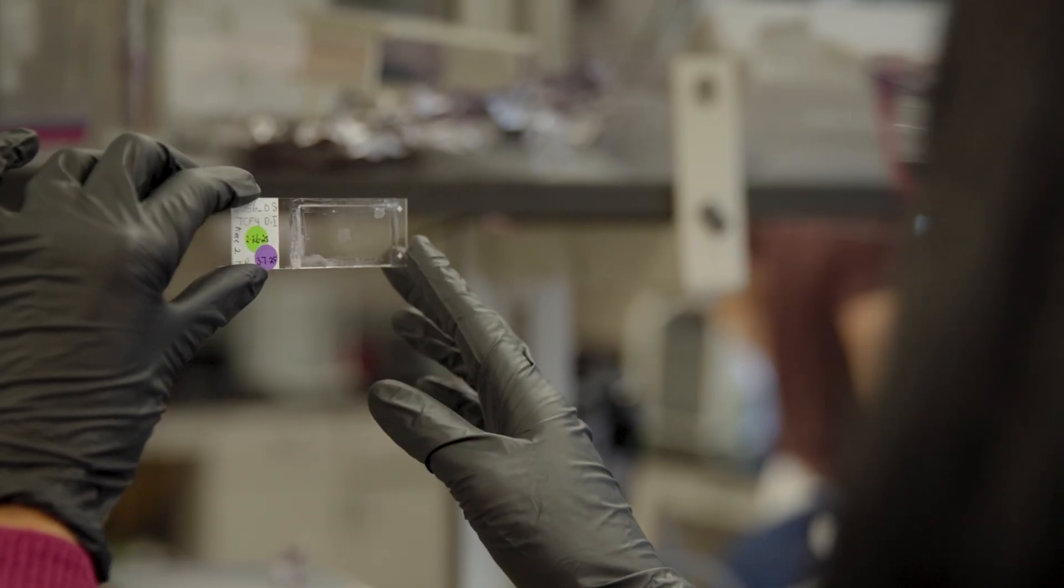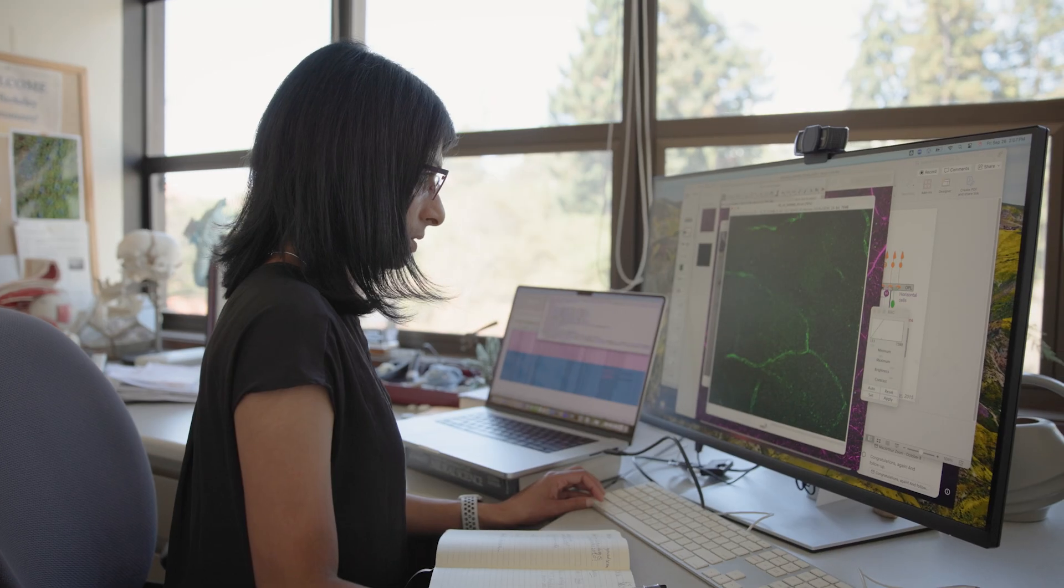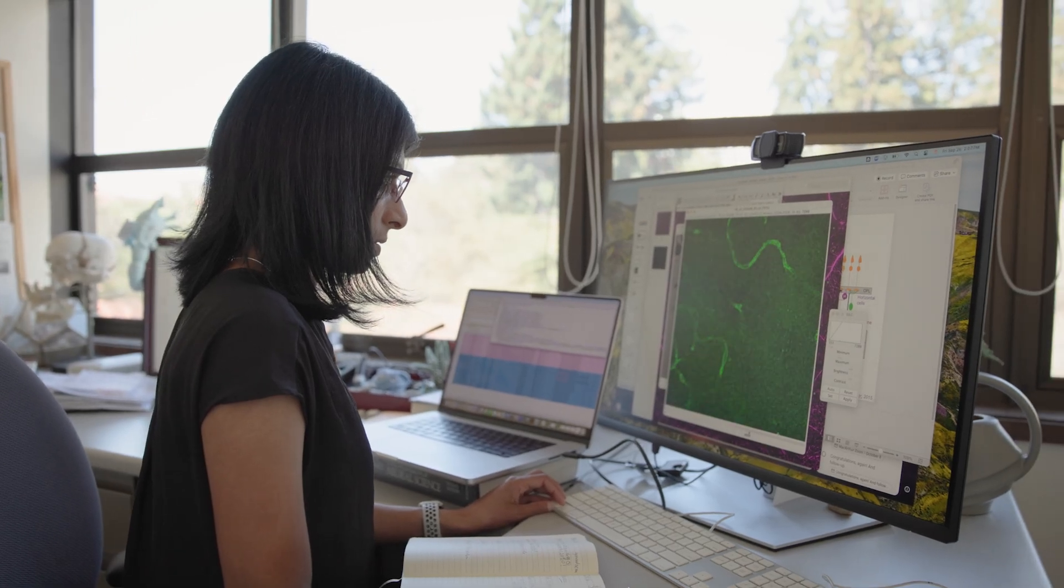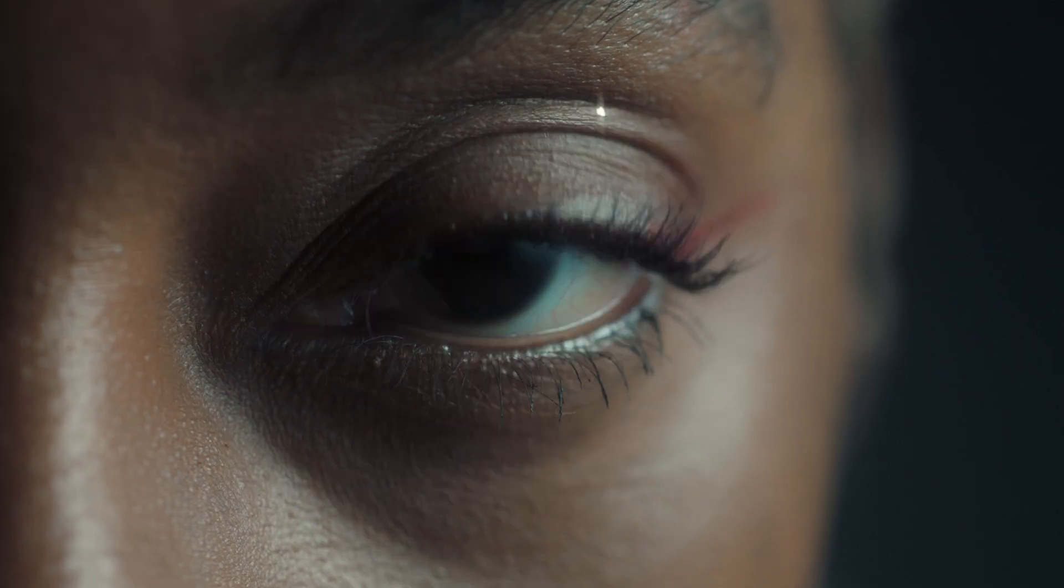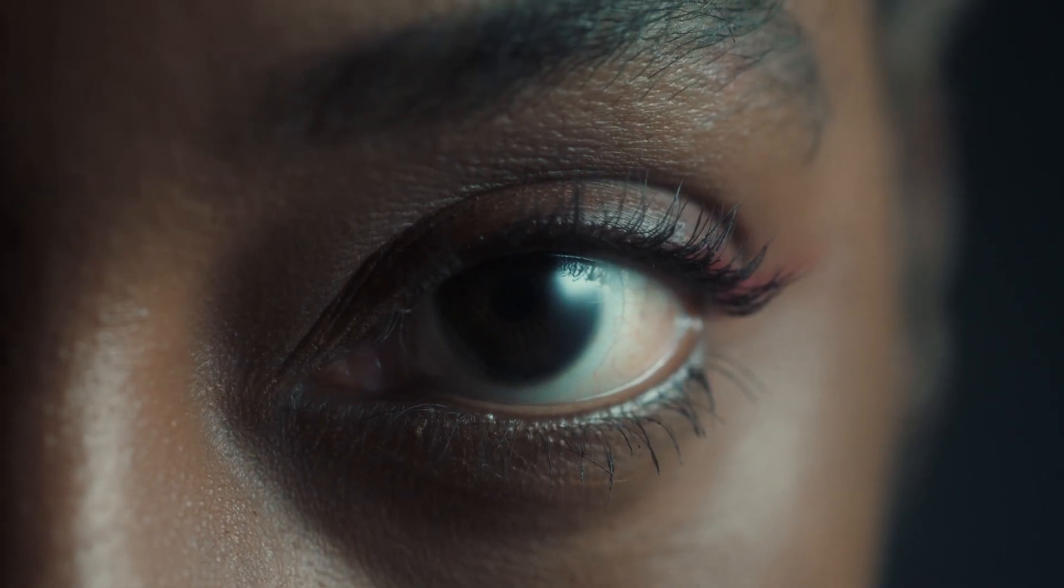Although we have cells in the retina that are really important for our conscious visual perception, there's also many visual processes that are completely unconscious, but they're equally important for our visual experience.